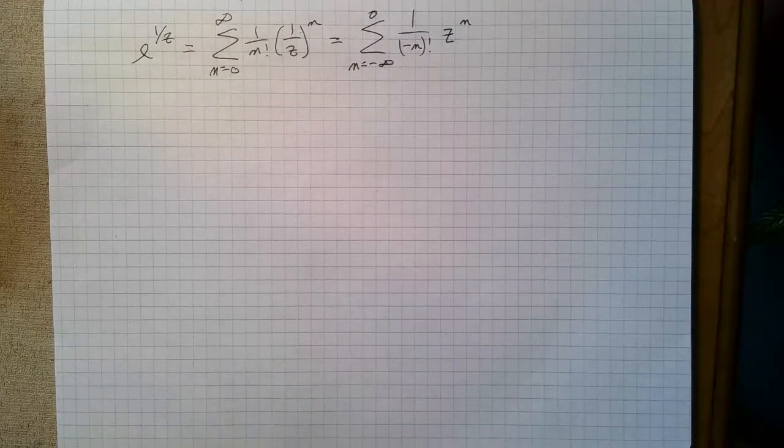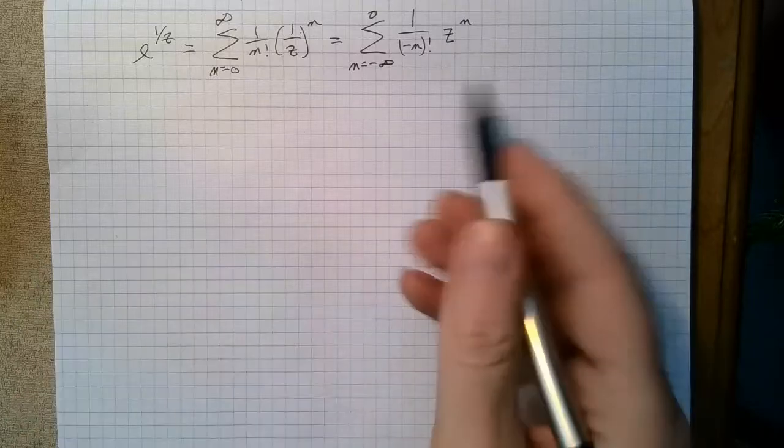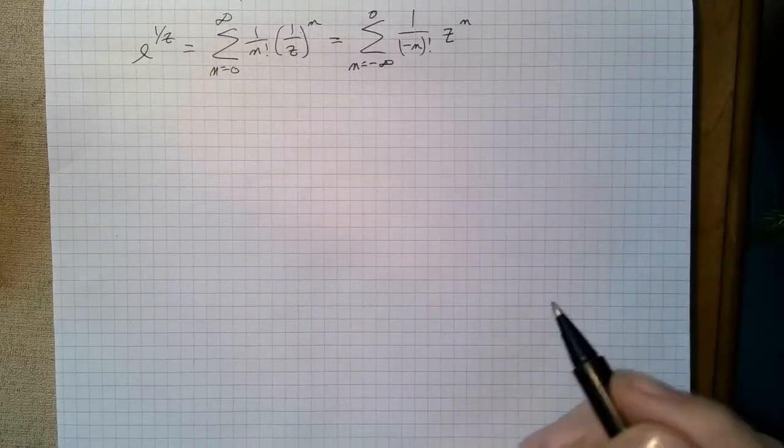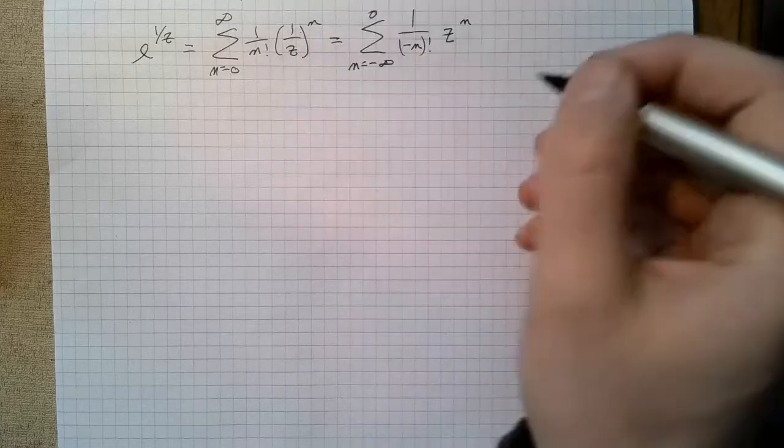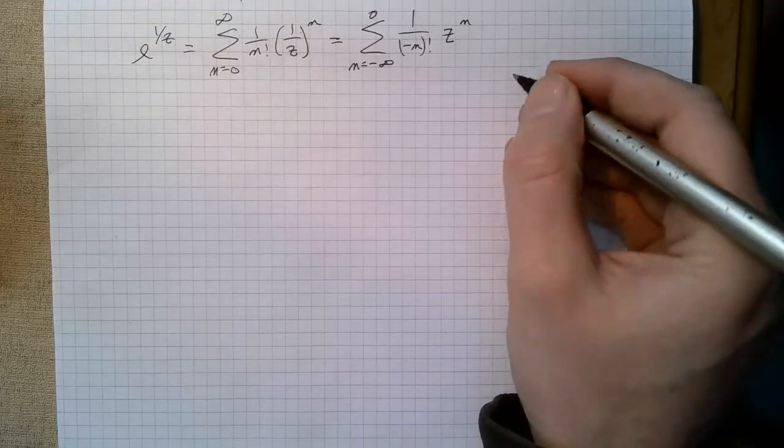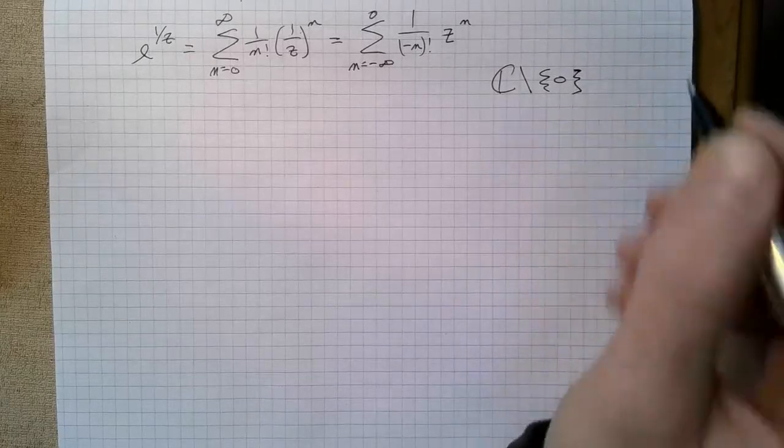And we know that this is the Laurent series of this function because it looks like the Laurent series and it converges on compact subsets of z minus 0, right, so of the punctured plane.